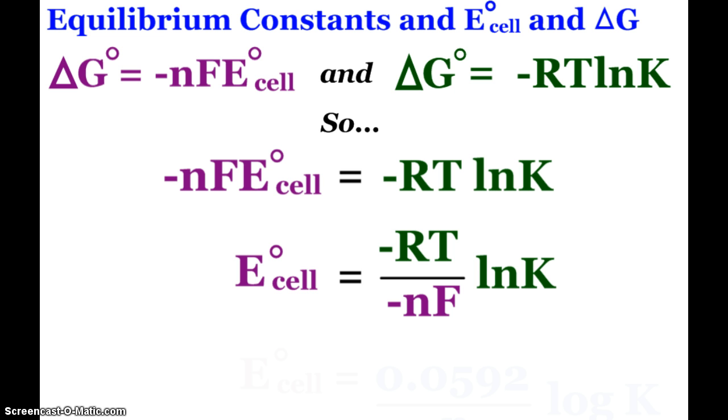What is R? R is our ideal gas law constant, typically 8.31. F is the Faraday constant that we just talked about, 96,485. What is T? Obviously T is temperature, but remember, since we're talking about the standard state, then our T has to be 25 degrees Celsius, which of course is 298 Kelvin.